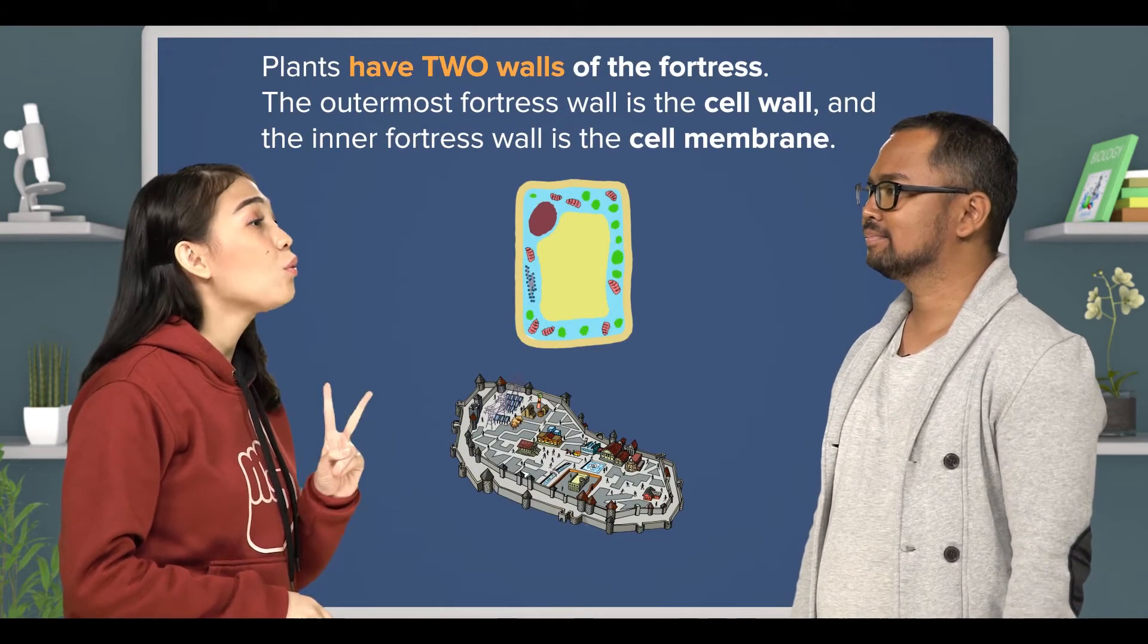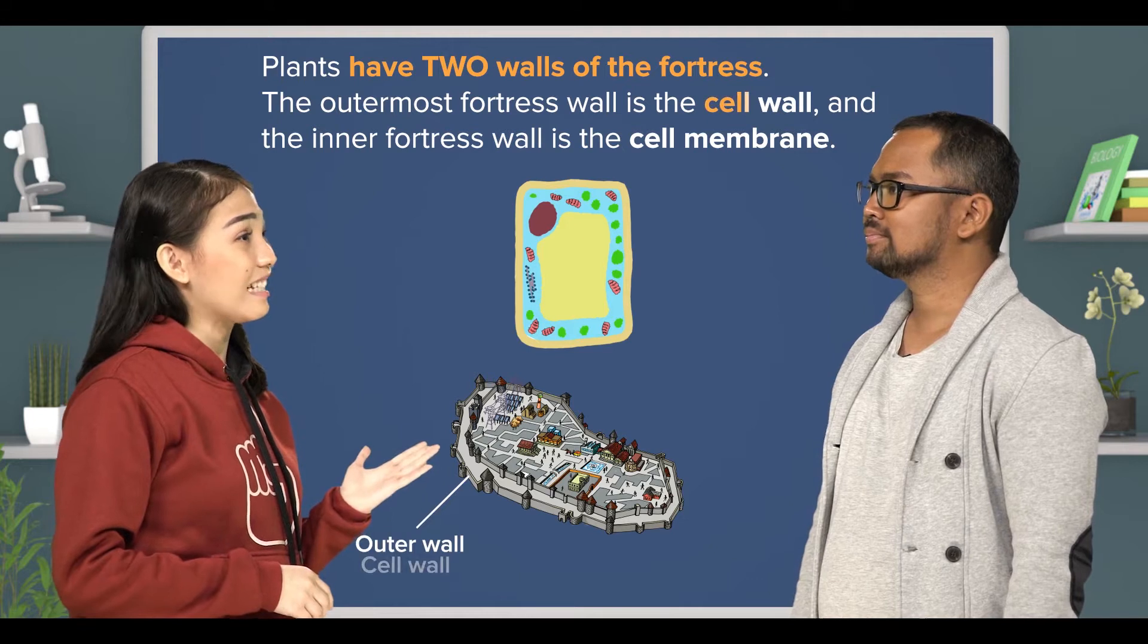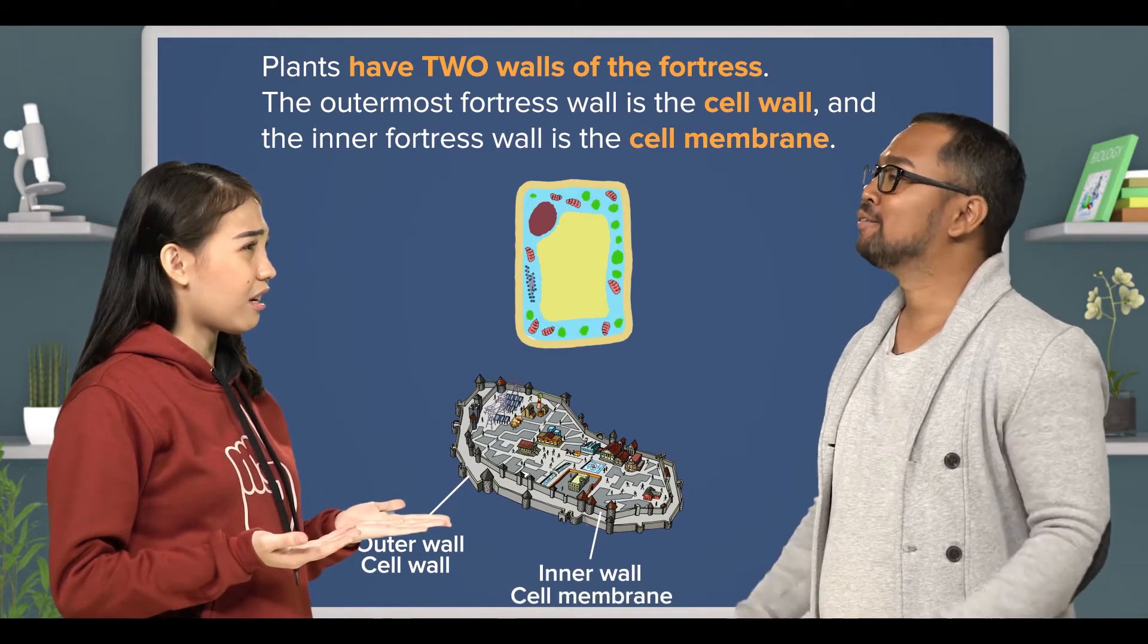That's right. And plants have two walls of the fortress. The outermost part of a fortress wall is the cell wall, and the inner fortress wall is the cell membrane.